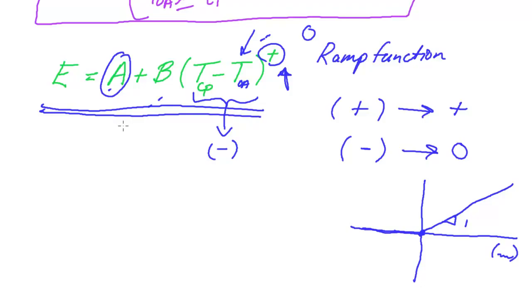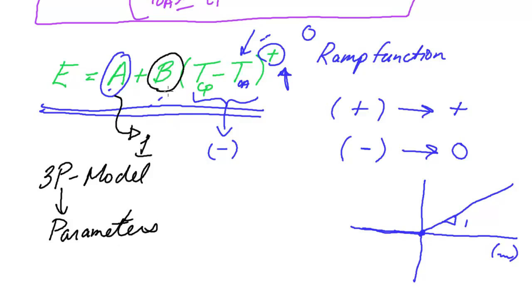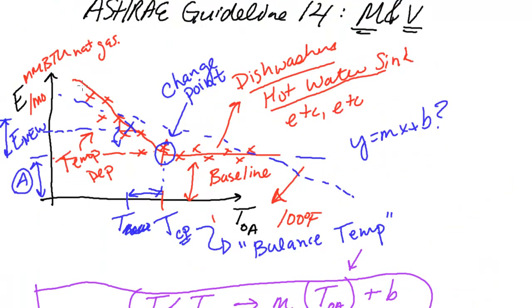And we come up with a special name for this formula. We call this formula a 3p model, where the p stands for parameters. And can you count them? There's three of them here. The three parameters for this model are a, b, and this change point. If you have those three things, you have now defined this function, this curve, this linear change point model.